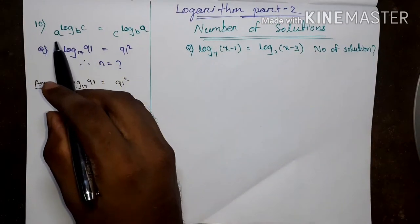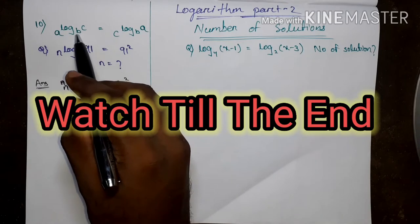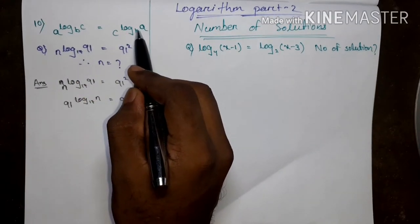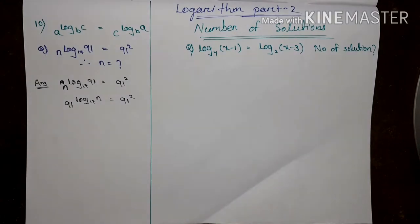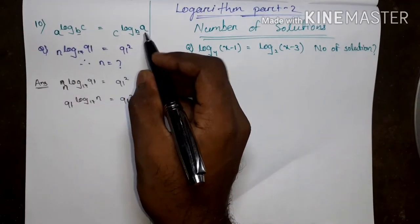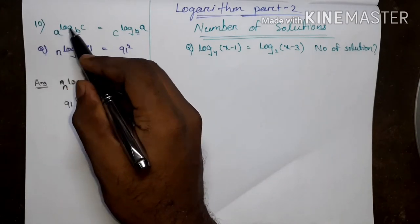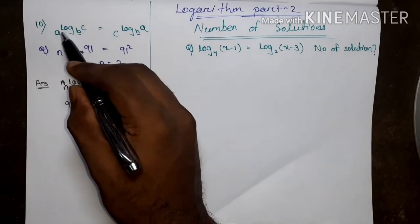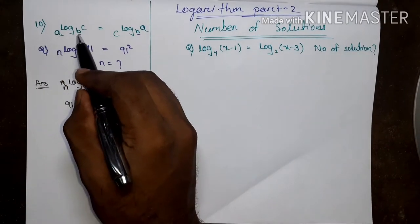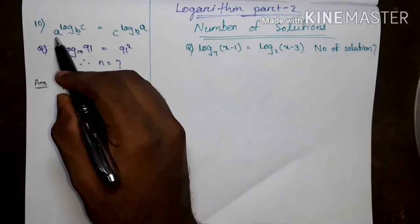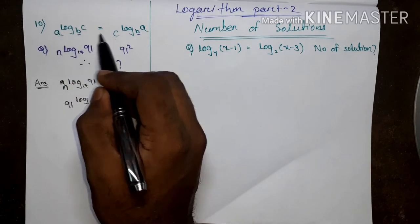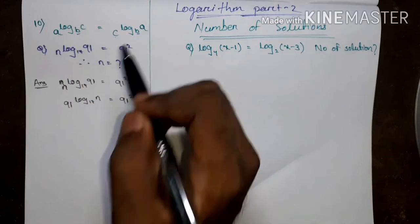The property is: A to the power log_B C equals C to the power log_B A. If the base is equal, then we can interchange the position of A and C. Listen, here the base is equal, so in place of A I place C, and in place of C I place A.